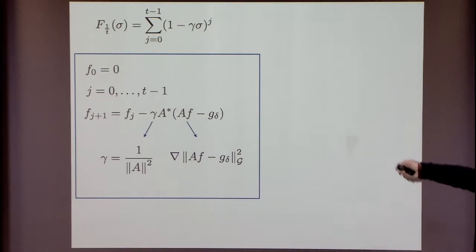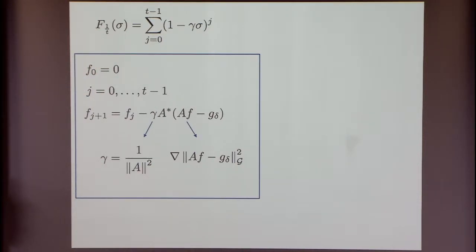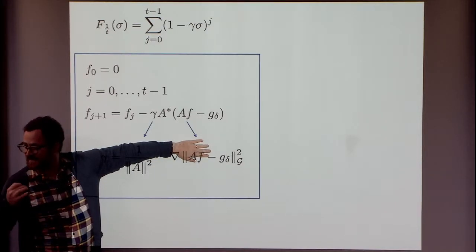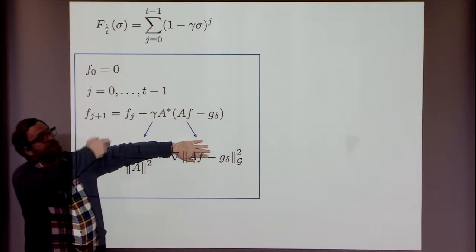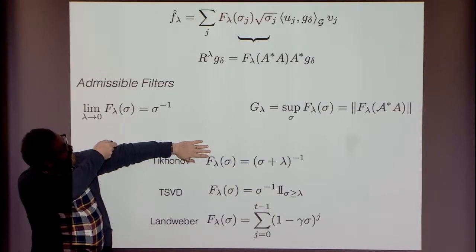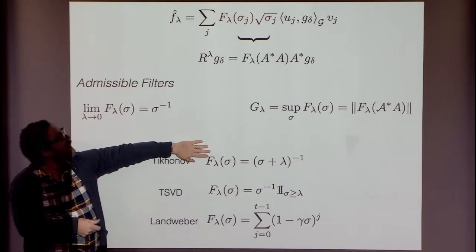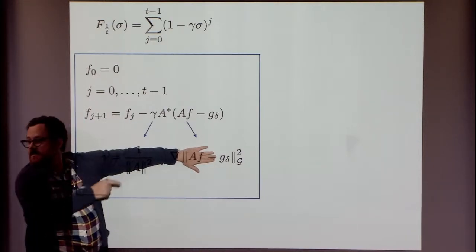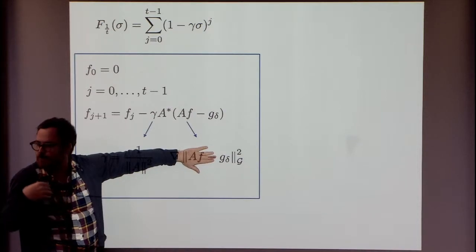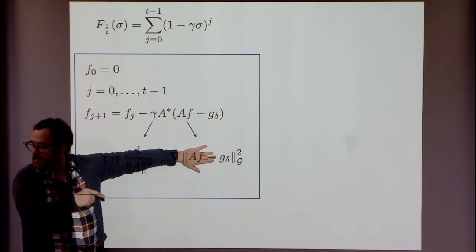The iterative method I want to show: think of lambda as 1/t. Look at this iteration — if you run it for t steps, at step t you get exactly the solution you'd get by computing the SVD and plugging in the filter expression. You can prove this by a one-line induction. The cute aspect is that to compute iterative regularization, you don't need the SVD — you just run an iteration. The complexity will be much better.